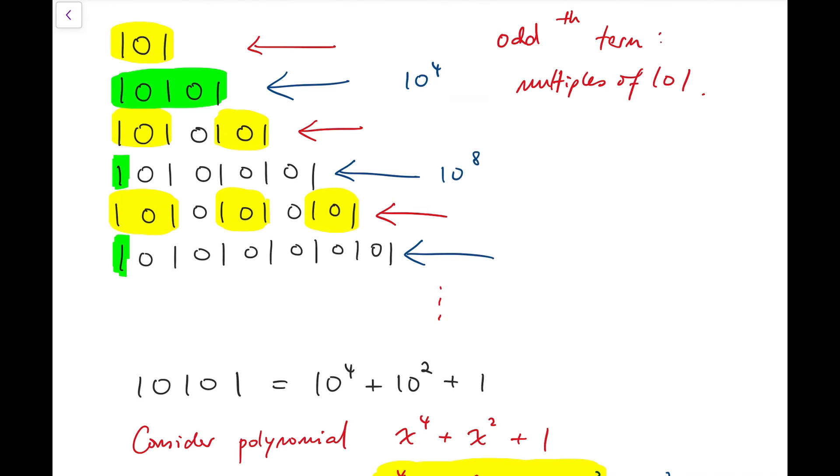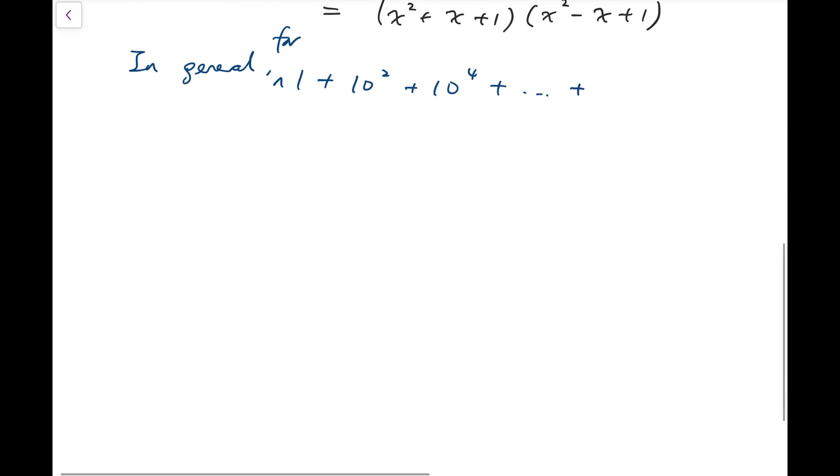Let me write this down: 10 to the power of 4, 10 to the power of 8, 10 to the power of 12, and so on. Now the pattern is that the index is a multiple of 4. So I'm going to say it's all the way up to 10 to the power, say, 4n.